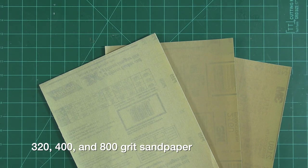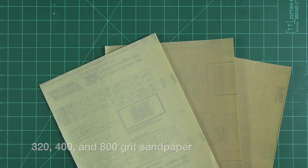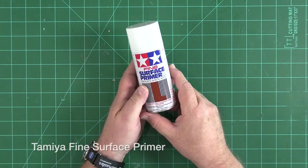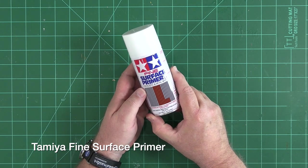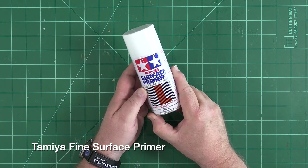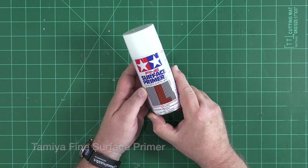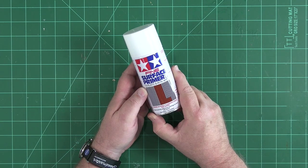After the primer cures, we'll sand it with a progression of sanding papers. Over the primed and sanded base, we'll shoot some more primer specific to the color coats we'll be using, and then sand again with very fine grit sanding film.